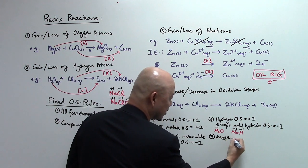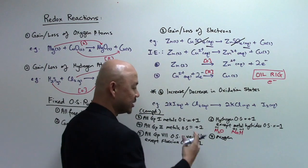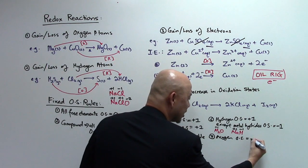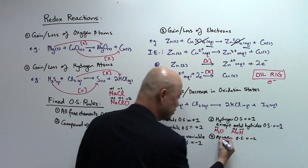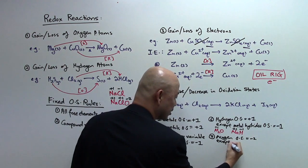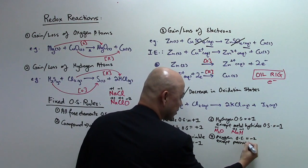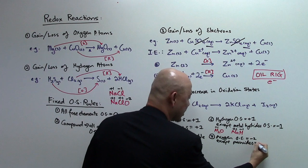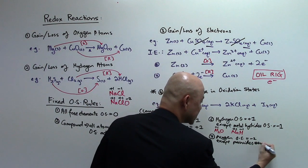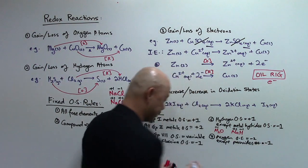Last but not least: oxygen in a compound has an oxidation state of minus two, except in peroxides, whereby the oxidation state is minus one. For example, in water the oxygen is minus two, but in peroxides, each hydrogen atom has plus one so the oxygen's oxidation state is minus one.